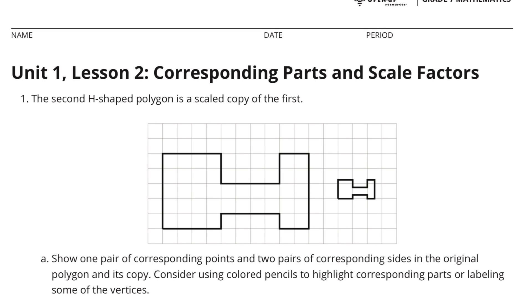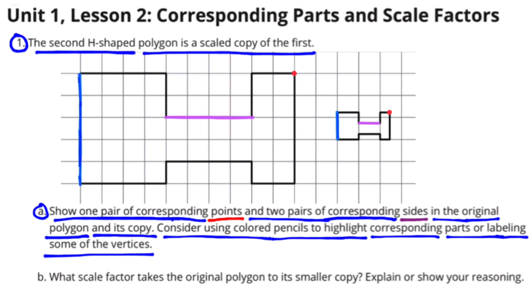The second H-shaped polygon is a scaled copy of the first. Part A: Show one pair of corresponding points and two pairs of corresponding sides in the original polygon and its copy. Consider using colored pencils to highlight corresponding parts or labeling some of the vertices. I used blue and purple to highlight corresponding line segments, and I used a red dot to identify a pair of corresponding points.